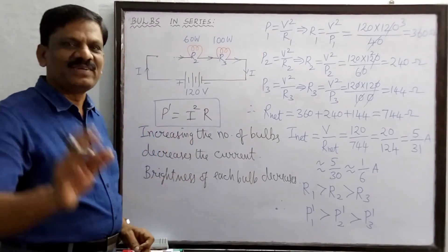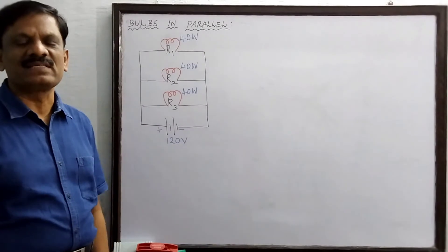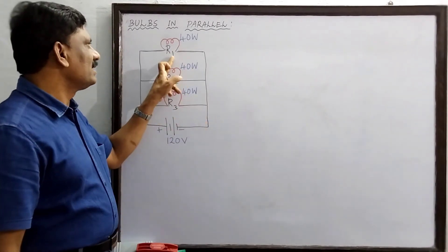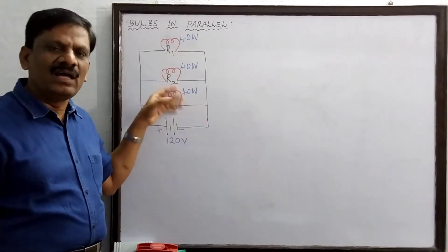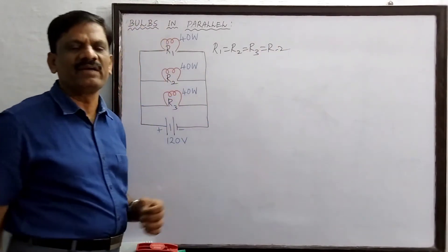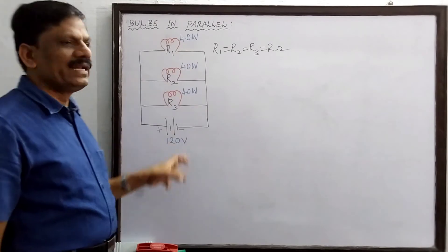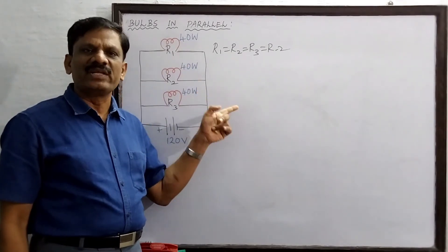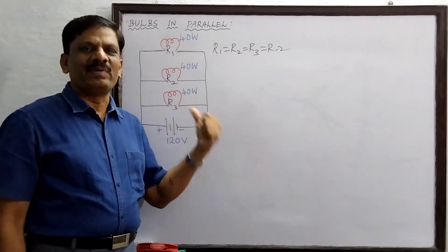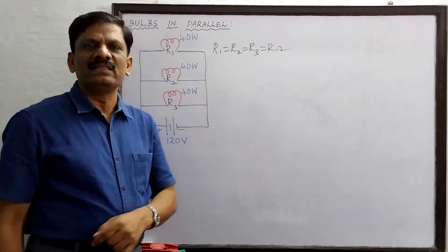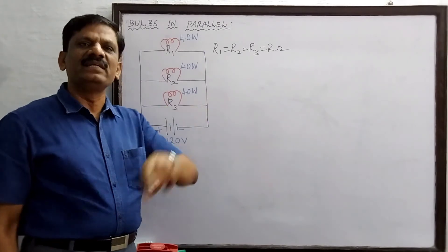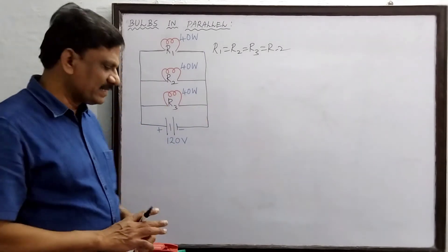Now let's discuss bulbs connected in parallel. I have considered three 40-watt bulbs with resistances R1, R2, and R3 — all equal since they have the same power. When connected in parallel, the effective resistance decreases. Comparing to the series case, all three bulbs in parallel will be brighter than when connected in series, and all three will glow with the same brightness.